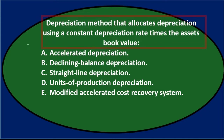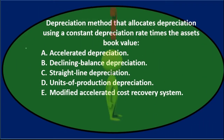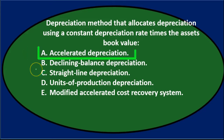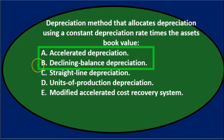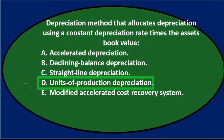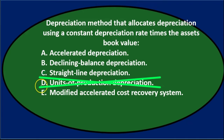So reading through this again — depreciation method that allocates depreciation using a constant depreciation rate times the asset's book value. This sounds a bit more complicated. We typically think of straight line first, but this sounds more complex than that, so C is probably not correct. A says accelerated depreciation — that could be correct. B says declining balance method. The declining balance method is actually a form of accelerated method, so it's possible B is more specific than A. D says units of production depreciation — there's nothing about units in this calculation, so that's not it.